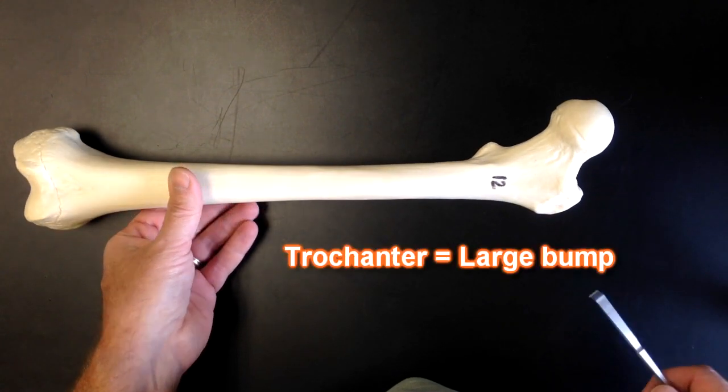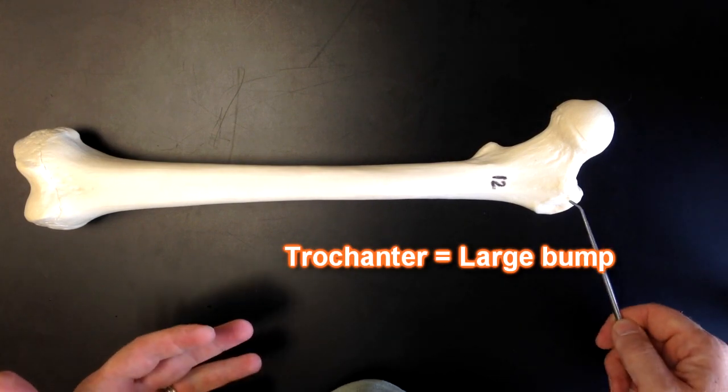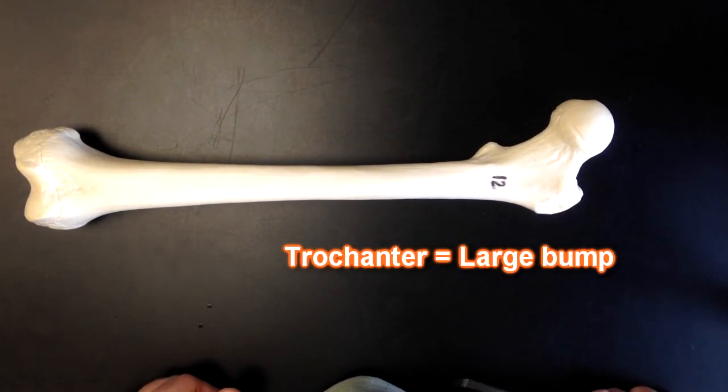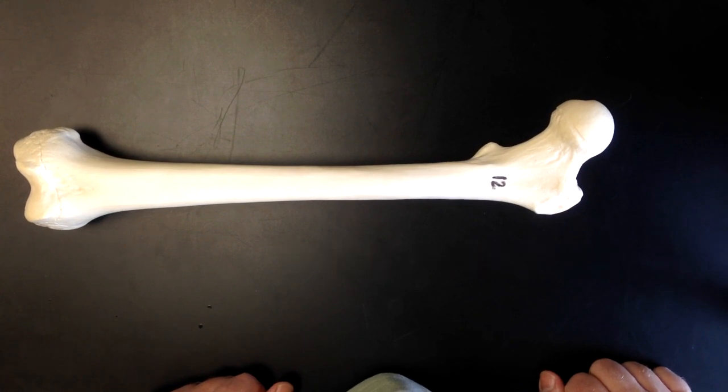Trochanter is a term that means large bumps. Those large bumps, the greater and lesser trochanter, are larger than the tubercles in other places in the body.